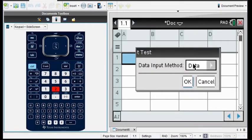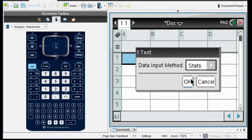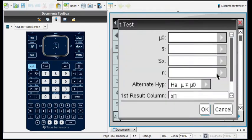And it's going to ask you for your input method. Do you have the data or do you have the stats? In this case, we have stats. We don't have anything to put into a list. And we're going to click OK. We would have chosen data if we had all of the values to put into a list.